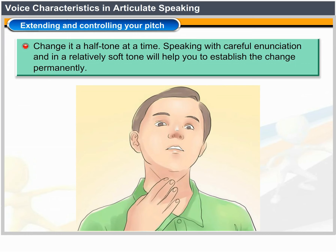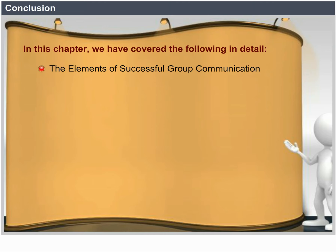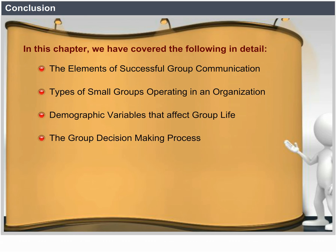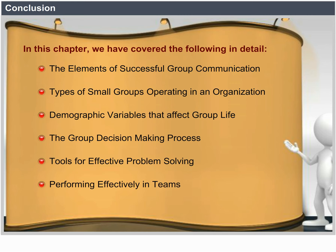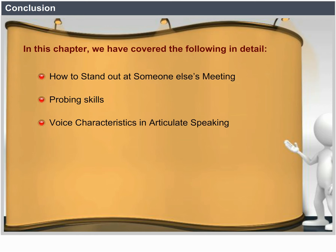Conclusion. In this chapter, we have covered the following in detail: the elements of successful group communication, types of small groups operating in an organization, demographic variables that affect group life, the group decision-making process, tools for effective problem solving, performing effectively in teams, managing meeting mania, how to stand out at someone else's meeting, probing skills, voice characteristics in articulate speaking, tone, pitch, rate of speech and volume.